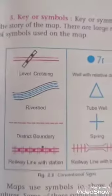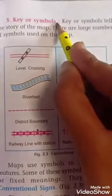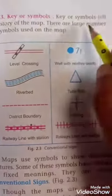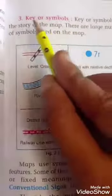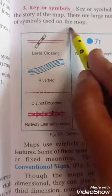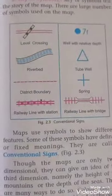Next is our key or symbols. Symbols mean we can say different types of signs. Key or symbols tell the story of the map. There are large number of symbols used on the map, same as traffic symbols.